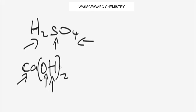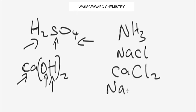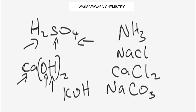Some further examples of compounds include ammonia, sodium chloride, calcium chloride, sodium carbonate, and carbon dioxide. These are all combinations of two or more elements chemically combined to form a compound.